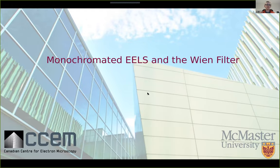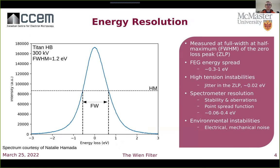Monochromation is very interesting for EELS because using a monochromator you're able to improve the energy resolution of your spectrum. If I take an EELS spectrum and look at the zero loss peak — electrons which have not lost any significant amount of energy to the sample — and look at the full width at half maximum, I use this as a measure of the energy resolution. The unmonochromated zero loss peak can have an energy resolution on the order of a few hundred meV to an eV.